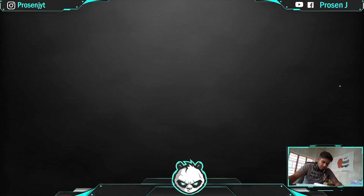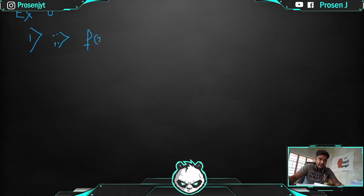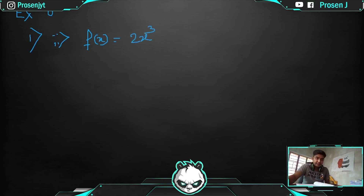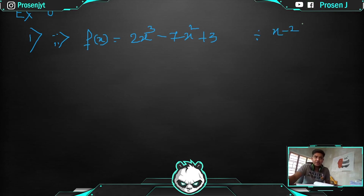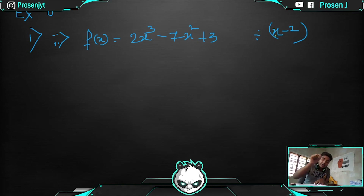Now coming to another problem. By the way, I am following Exercise 6 from ML Agarwal book, doing sum number 1, part 2. The function f(x) given is 2x³ − 7x² + 3. As I told you, function of x means it depends only on variable x. You have to divide this by x − 2.